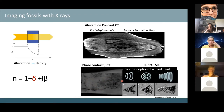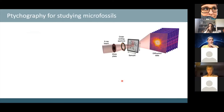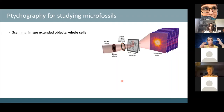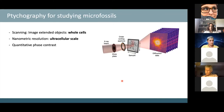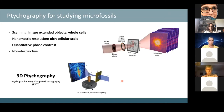This brings us to ptychography, which is also advantageous for microfossils. As a scanning method, it allows imaging of extended objects relative to beam size, giving images of whole cells. We get nanometric resolution at the sub-cellular scale, quantitative phase contrast giving compositional information, and it's non-destructive. We can also do this in 3D — covering all the requirements I described.